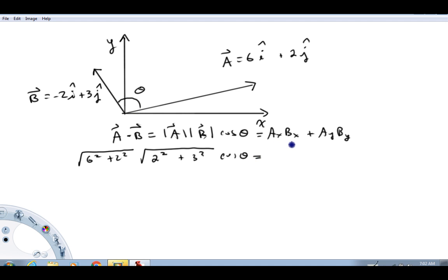Equals, right, Ax·Bx is going to equal 6 times negative 2, that minus sign is not optional, it does not go away, and then Ay·By is going to be 2 times 3, right?